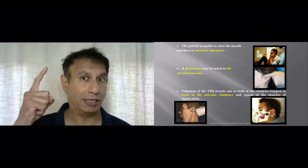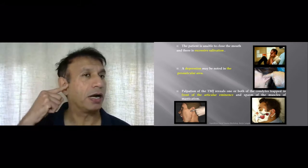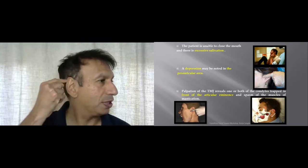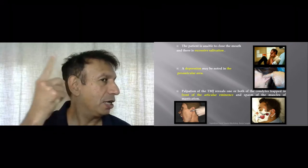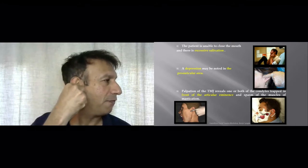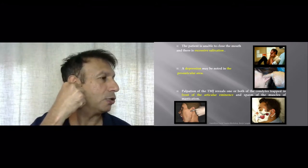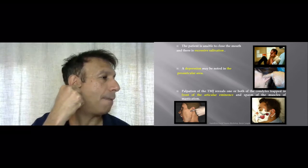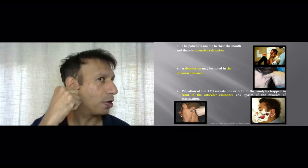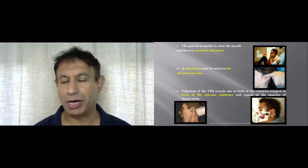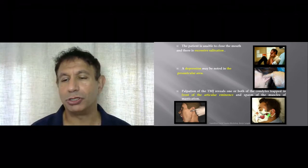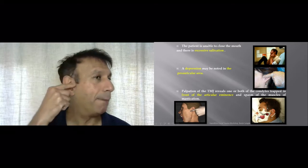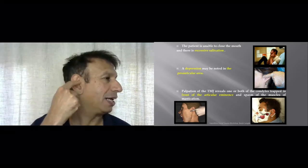If you take your finger and put it in front of the tragus of your ear and then open and close your mouth, you will feel your condyle bobbing up and down in this location. The condyle is the top part of your jaw joint — that is what you're feeling bumping up and down in front of the tragus.